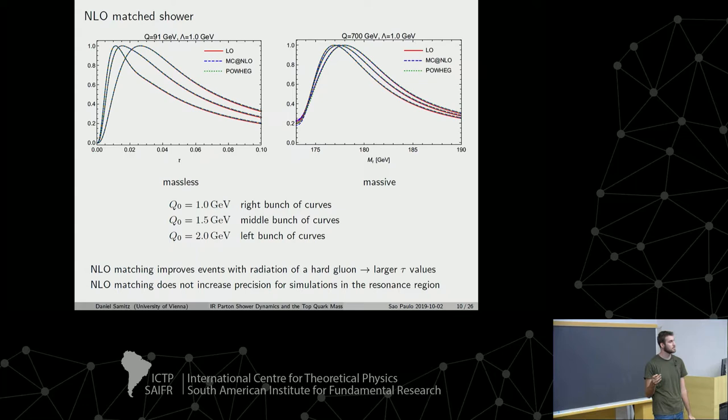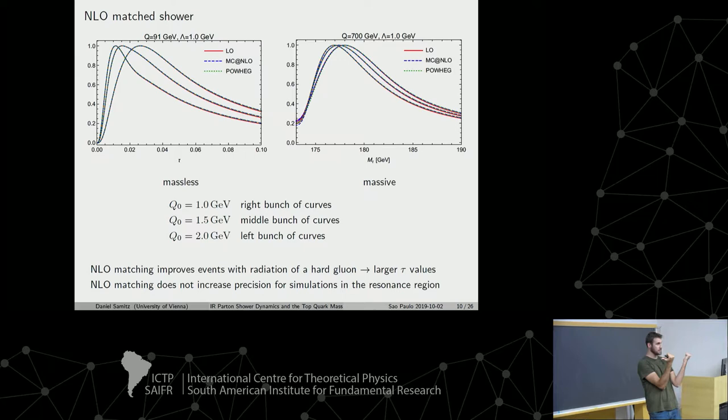Tau is the two-jettiness observable — an event shape that tells you how jet-like an event is. This is our observable throughout the talk. Tau equals zero means two pencil-like jets; tau approaches one means spherical. In the peak, it is similar to the mass in the two hemispheres.